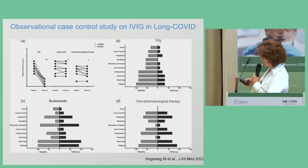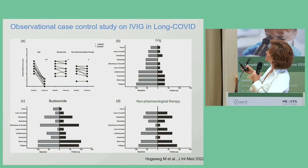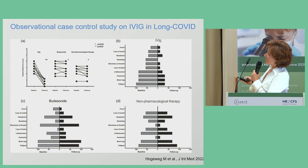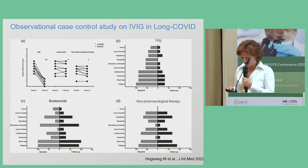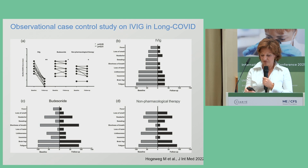Looking at specific symptoms, we observed significant improvement in all symptoms in all IVIG patients. In comparison, patients under baricitinib showed only a few responders, and patients on non-pharmacological supportive care also showed improvement that was not statistically significant.